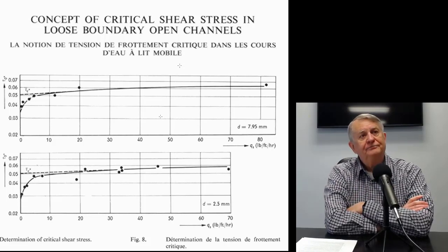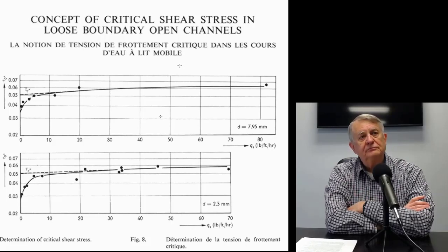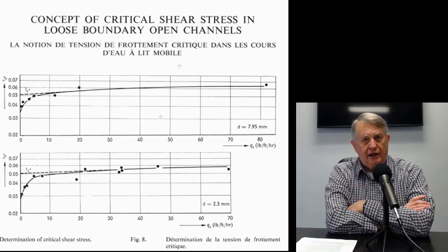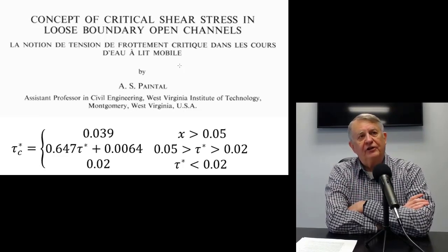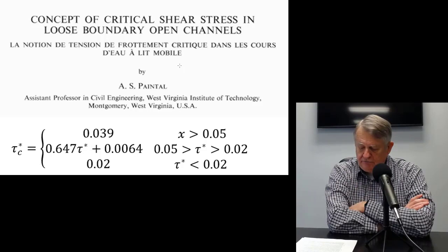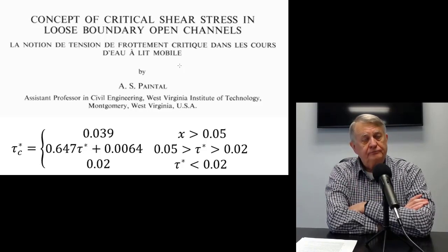In Meyer-Peter Müller it's in the high 0.04s. In Larson, I think it's 0.039. But also in Larson-Copeland, it'll go down to 0.02, because it's a function of the shear stress and the grain size — which means that you will get more gravel transport, which is what we weren't getting enough of.